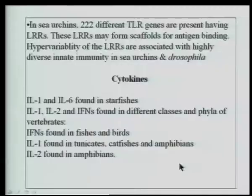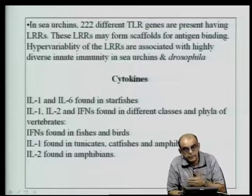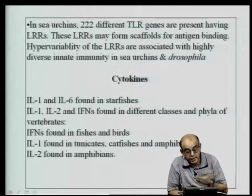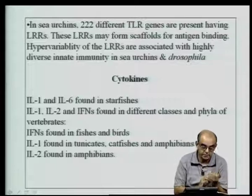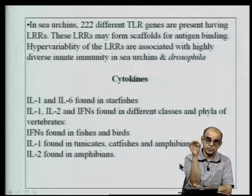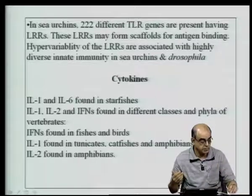Many members of this rearranging gene system — VLR-A and VLR-B — play an important role in what you call a B cell immunoglobulin receptor equivalent, something like putative B cells or putative T cells. In sea urchins, several LRRs take part in immune recognition, and IL-1, IL-6, and interferons — cytokines found in early vertebrates — have been found in tunicates, catfishes, and amphibians. IL-1 and IL-6 first appeared as like-molecules in starfishes, showing how early such advanced molecules appear.